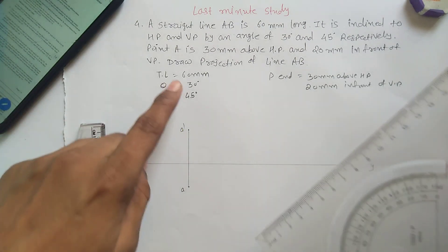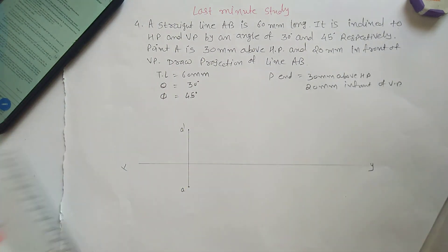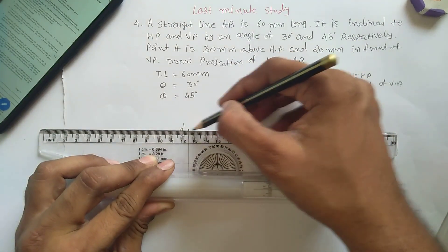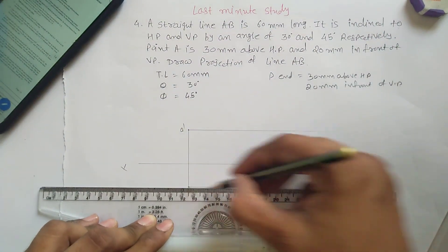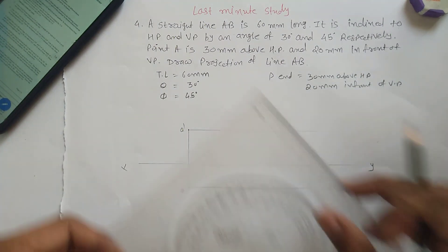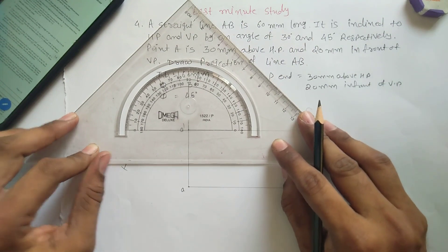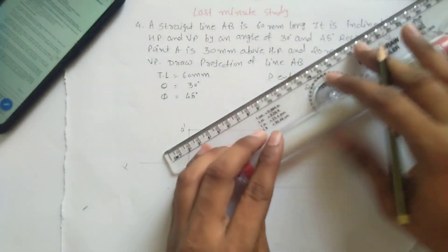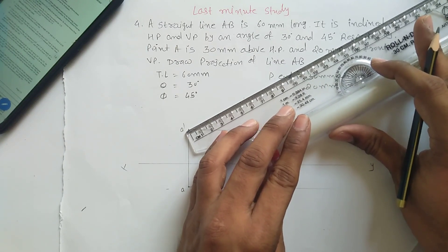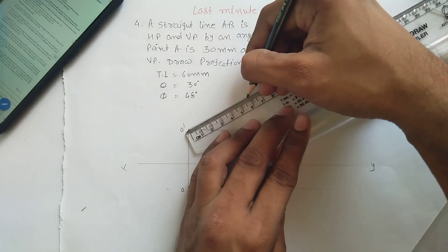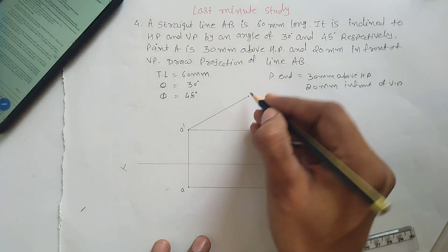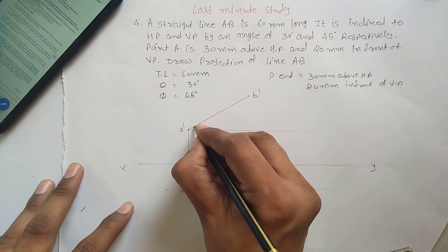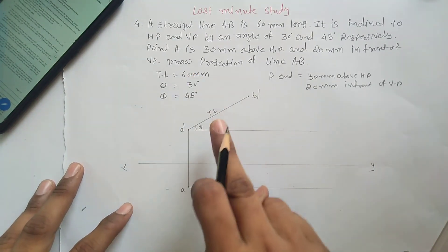Now measure the angles 30° and 45° using the true length. Draw reference lines from A dash and A. Angle theta is 30 degrees, so measure 30 degrees from A dash and draw a line of 60 mm — the true length — to get the intermediate point B1 dash. This is not the final point; B1 dash is the intermediate point constructed using theta and true length of 60 mm.